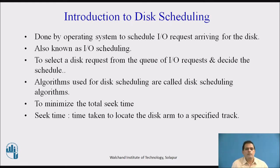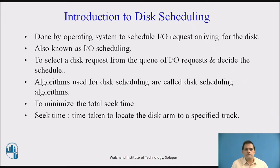Introduction to disk scheduling. Disk scheduling is done by the operating system to schedule IO requests arriving for the disk. The operating system maintains IO requests in a queue called the request queue, and it is scheduled by the operating system. This process is also known as IO scheduling.